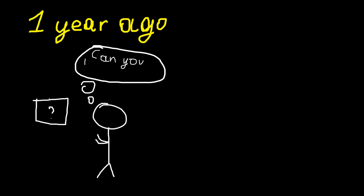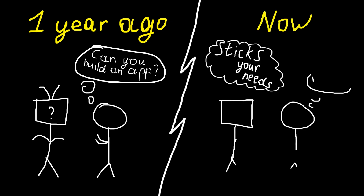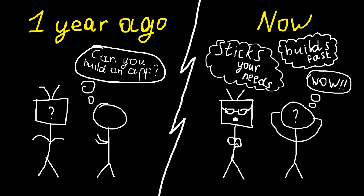Vibe Coding lets anyone build personal software — this wasn't possible just one year ago. These apps fit your needs perfectly and can be built in just hours. But which is the best tool for this? To find out, we'll build the same app in two of the most popular AI platforms: Lovable and V0. We'll share all the prompts and workflows so you can do it too.